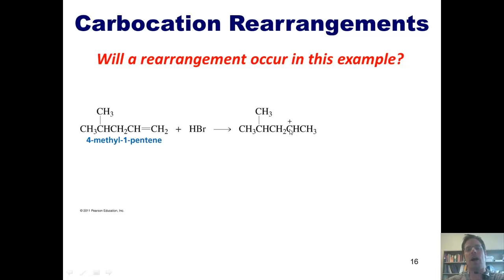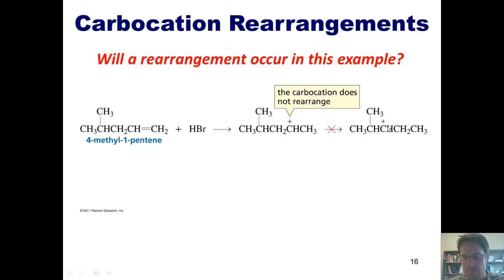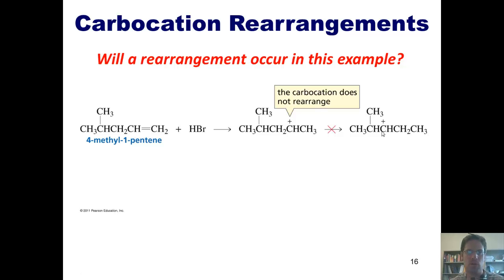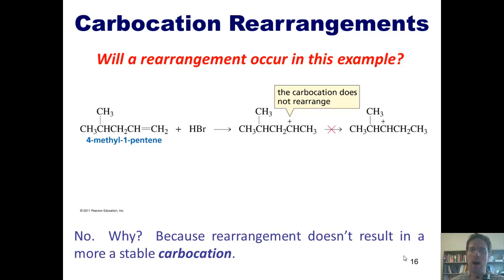Is there a hydrogen stuck to either of those two carbons? The answer is yes. So will a neighboring hydrogen shift over one position? Well, if the hydrogen to the left did so, we would now have a positive charge on that carbon. Has anything improved? I've got a secondary carbocation here, and if I have a hydride shift — the hydrogen moving over one position — I end up with the positive charge on a carbon that is also a secondary carbocation. Has the stability improved? I've gone from secondary to secondary. The answer is no. So will a rearrangement occur? No, it will not, because doing so doesn't result in a more stable carbocation.